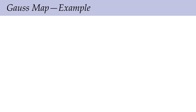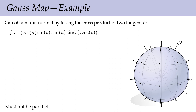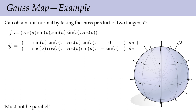It's helpful to look at concrete examples where we can compute the Gauss map. Let's look at our favorite example: the sphere. Our strategy for getting a unit normal is simply to find two tangent directions at every point and take their cross product — we know the cross product of two vectors is orthogonal to both, so if we want a vector orthogonal to tangent vectors, we just take the cross product of two tangent vectors. Our map f in this case is f(u,v) = (cos(u)sin(v), sin(u)sin(v), cos(v)), and the differential df is obtained by taking partial derivatives of each component of f.